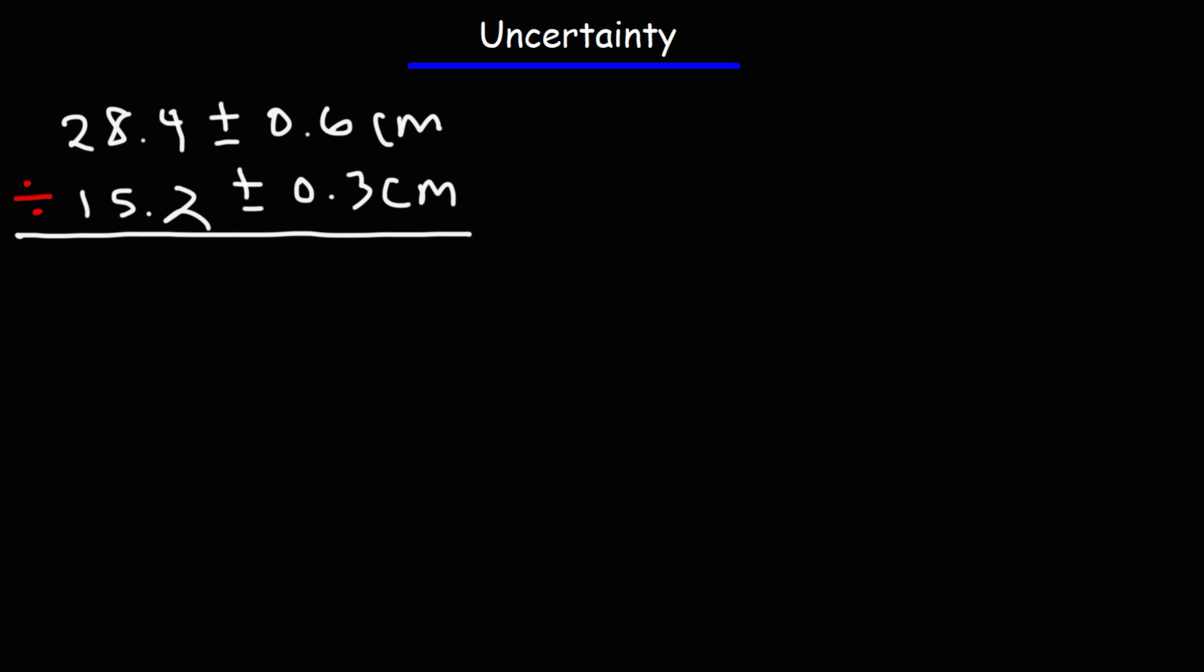But now just like before, we need to convert the uncertainty into a percentage value. Or we need to get the percent uncertainty. So let's start with the top number. It's going to be 0.6 divided by 28.4 times 100%. So 0.6 times 100 is 60. 60 divided by 28.4. That's 2.1127%. Now let's do the same thing with the other number. So we're going to take 0.3 and we're going to divide it by 15.2 and then multiply that by 100%. So 0.3 times 100 is 30. 30 divided by 15.2. That is going to give us 1.9737%.